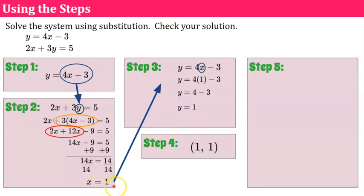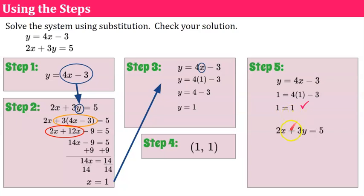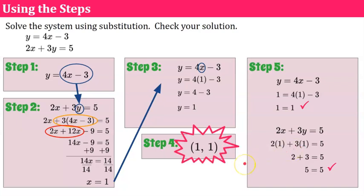Be careful — sometimes in step two you might have solved for y instead. Final step, my favorite part: let's check. We write down the first equation and replace y with 1 and x with 1. 4 times 1 is 4 minus 3 is 1, and 1 equals 1 — it checks. Now the second equation: replace x with 1 and y with 1. 2 plus 3 is 5 — it checks. Our solution is the ordered pair (1, 1).